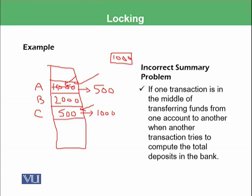Previously it had 1000 plus 2000 plus 500, so the total is 3500. However, now it would show 500 for account A, 500 for account C, and 2000 for account B, giving a total of 3000. So it should be 3500, but actually the summary we are getting is 3000 because those 500 deducted from account A have not been put into account C yet, and in the middle of this fund transfer another transaction asked for the overall account summary.